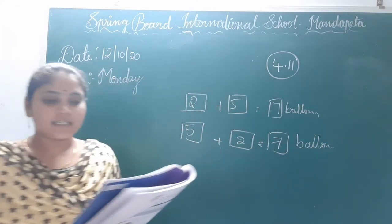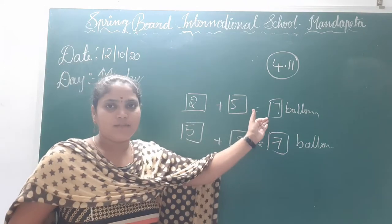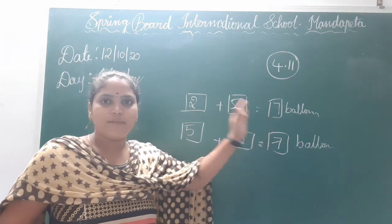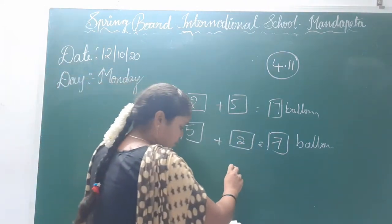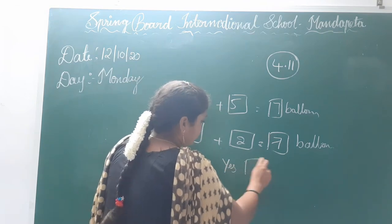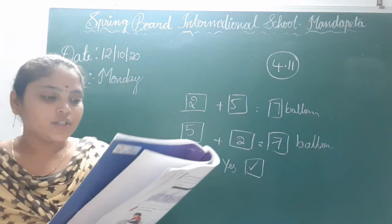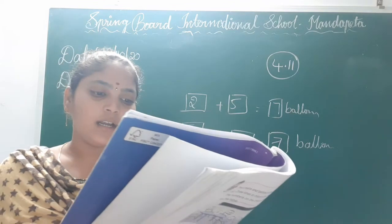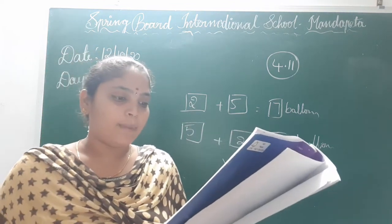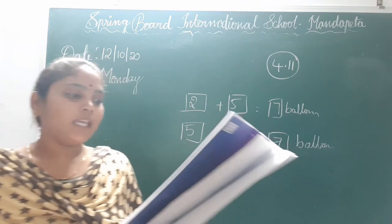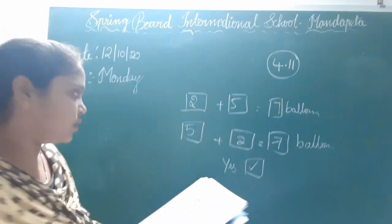Tina and Maya drew the same number of balloons, children. Maya drew 7 balloons and Tina also drew 7 balloons. Both of them drew the same number. So the total number is the same. Let us fill the blanks to see if the same thing happens while adding 2 other numbers.